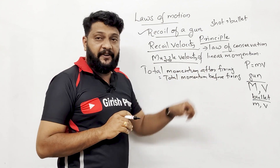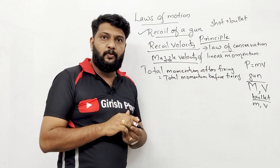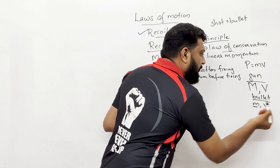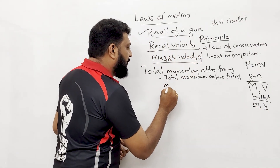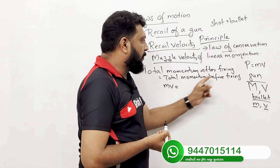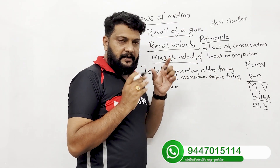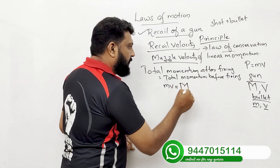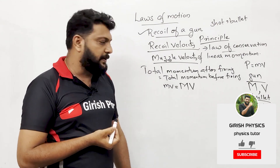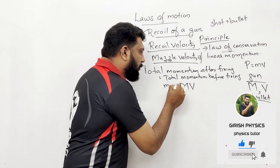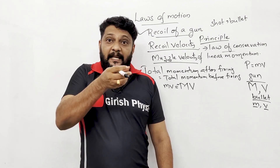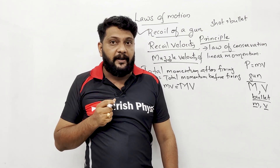Total momentum after firing: bullet momentum is small m times small v. Total momentum before firing equals zero, so gun mass capital M times recoil velocity capital V, plus bullet mass m times muzzle velocity v, equals zero. The result carries a minus sign because the gun is recoiling in the opposite direction to the bullet.